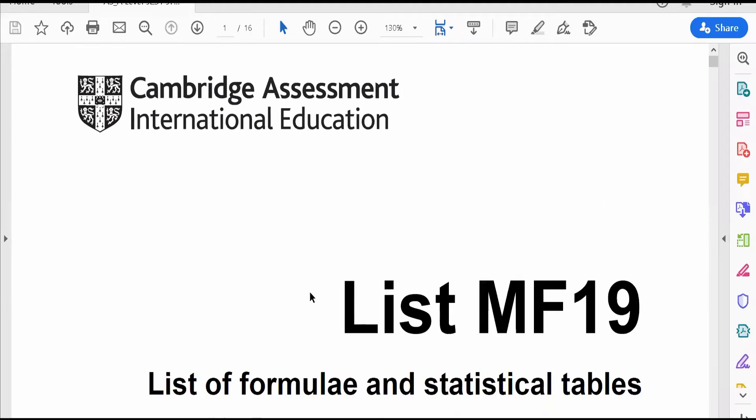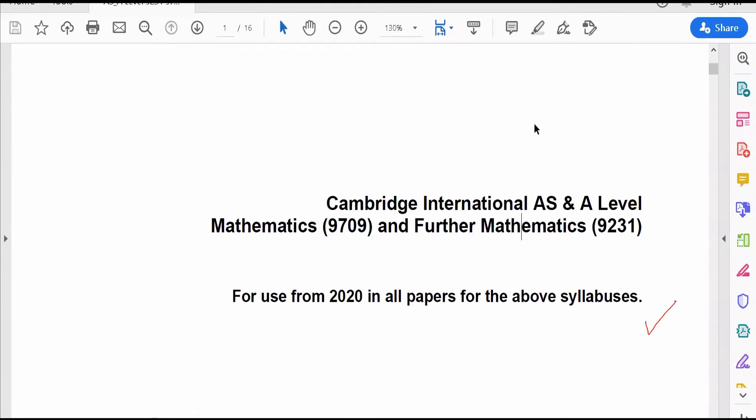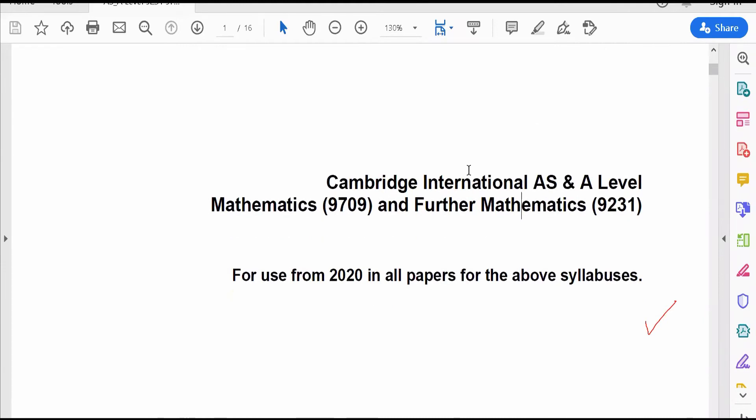Let's have a look of the formula list given. This is the formula list given in the exam, which is called list MF 19, and it's meant for the exam paper 9709, for use from 2020 onwards.